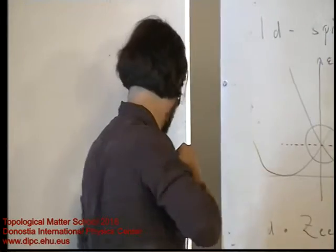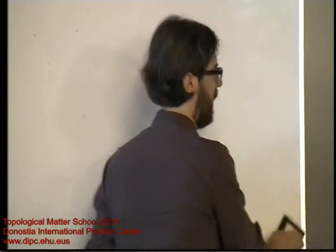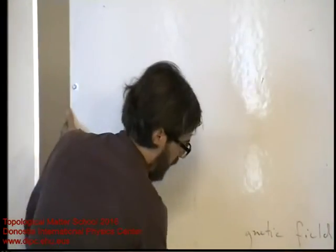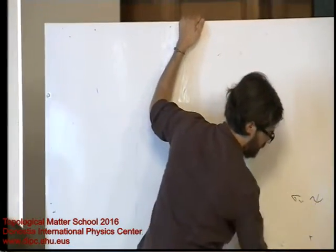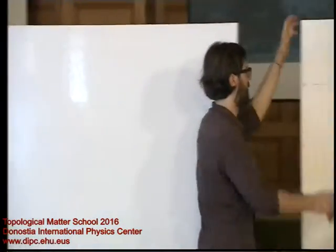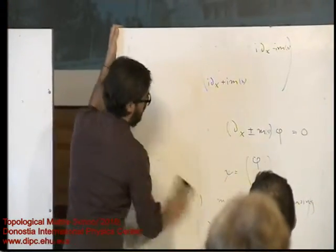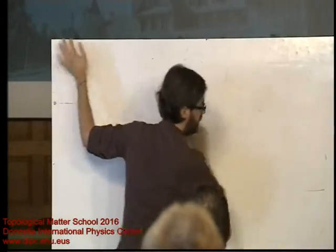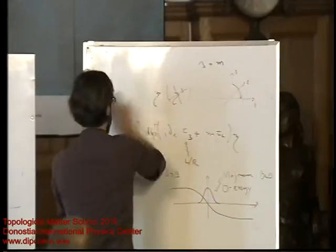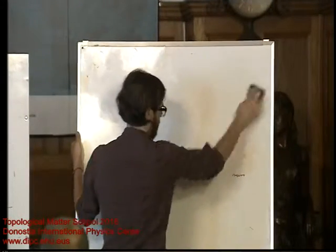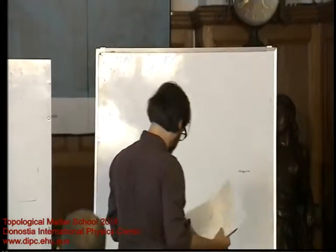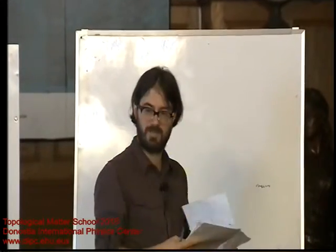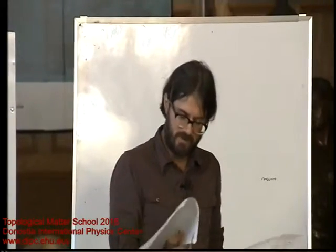Weyl fermions are ubiquitous in condensed matter physics because every time-reversal invariant point with spin-orbit coupling and no inversion symmetry is a Weyl fermion. They don't need to be stuck at time-reversal invariant points because they don't need any symmetry to exist, as we understood through several ways: the Chern number of a Weyl node, the monopole, the Dirac string, etc. Now I want to understand it through one last way, which brings us to the experimental consequence of having this monopole number.